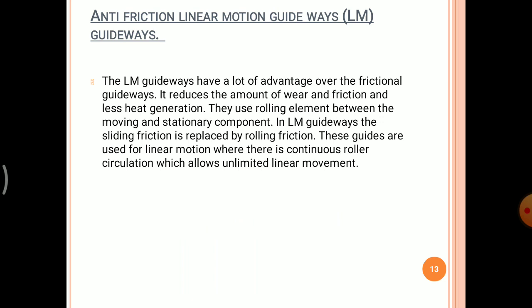Let us discuss about the anti-friction linear motion guideways. These are different from the friction guideways — here there exists rolling friction, whereas in the friction guideways there is sliding friction. The advantage of anti-friction guideways is that it reduces wear, friction, and heat generation. They use a rolling element between the moving and stationary component. In the linear motion guideways, sliding friction is replaced by rolling friction, and continuous roller circulation allows unlimited linear movement.